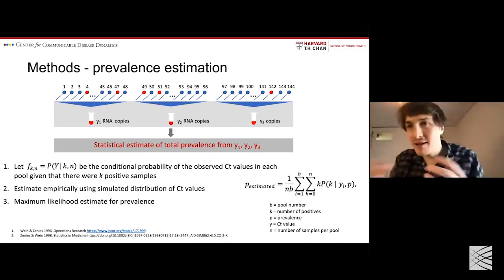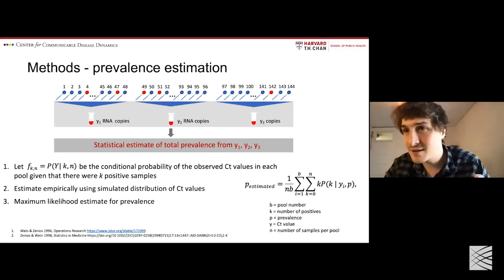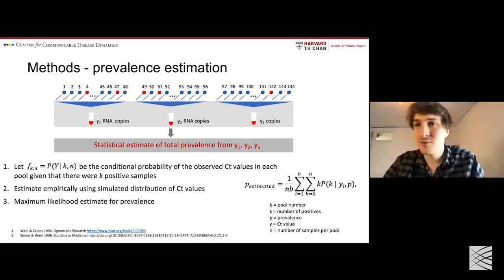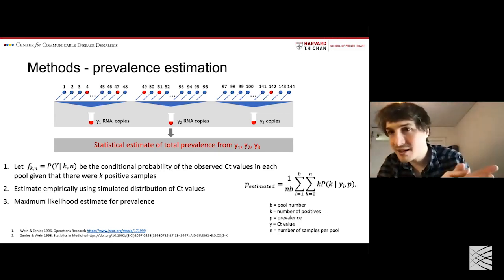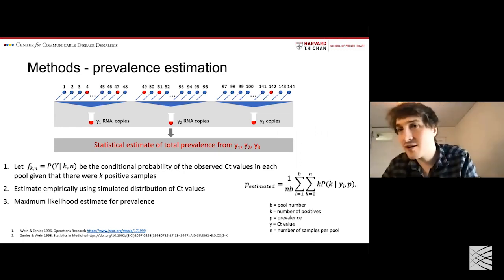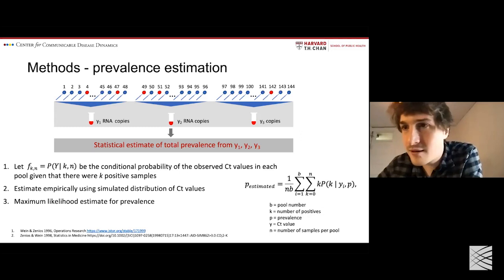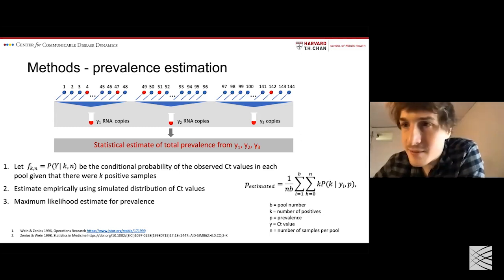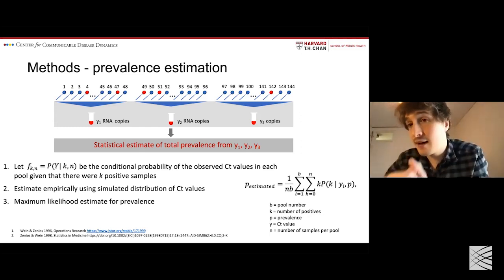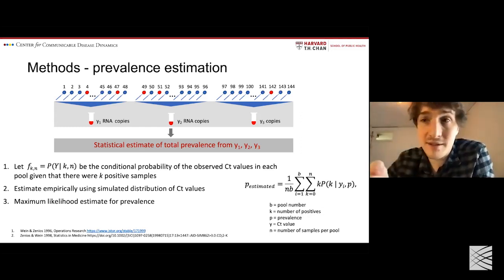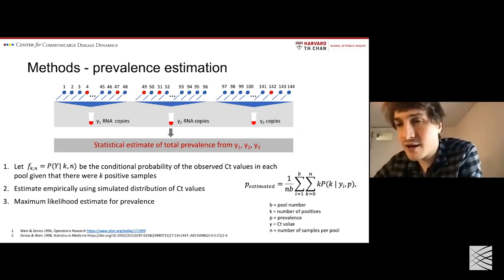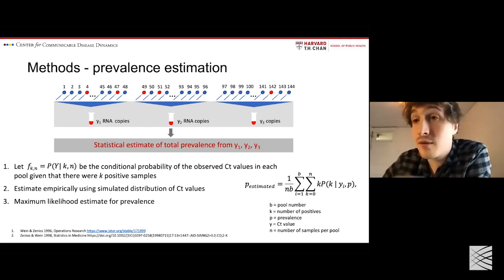Building a system that incorporates viral load understanding for surveillance: I've shown how to optimize individual sample identification. In epidemiology, we're also interested in population-wide metrics like prevalence — what proportion of people are infected at a given time. It turns out we can estimate prevalence efficiently using pool testing as well. We found a method developed for HIV pool testing, where antibody measurements are pooled and a statistical framework estimates HIV prevalence using only a small number of tests.